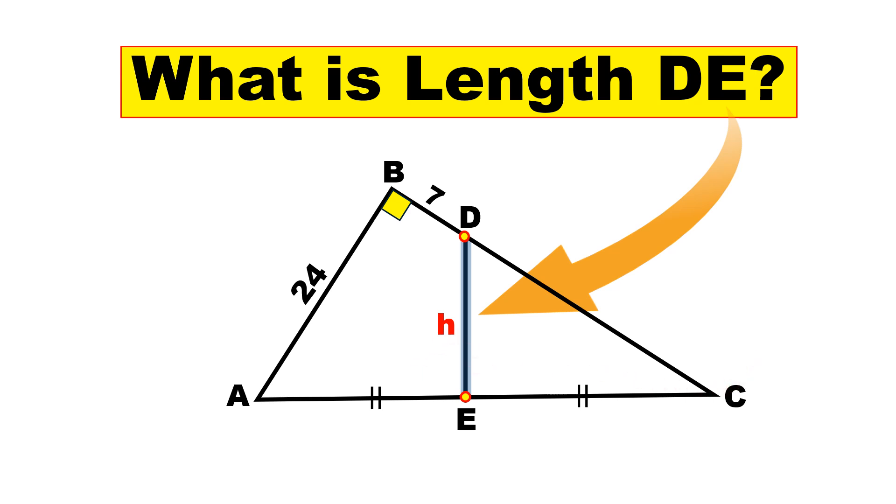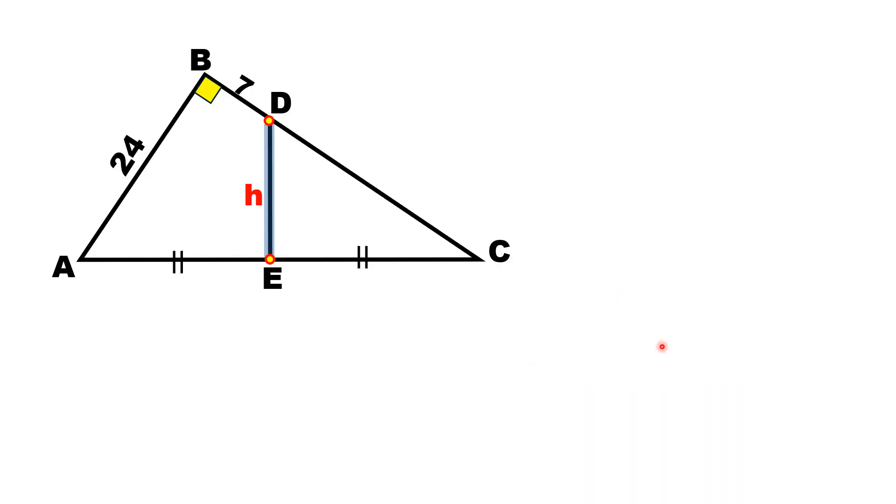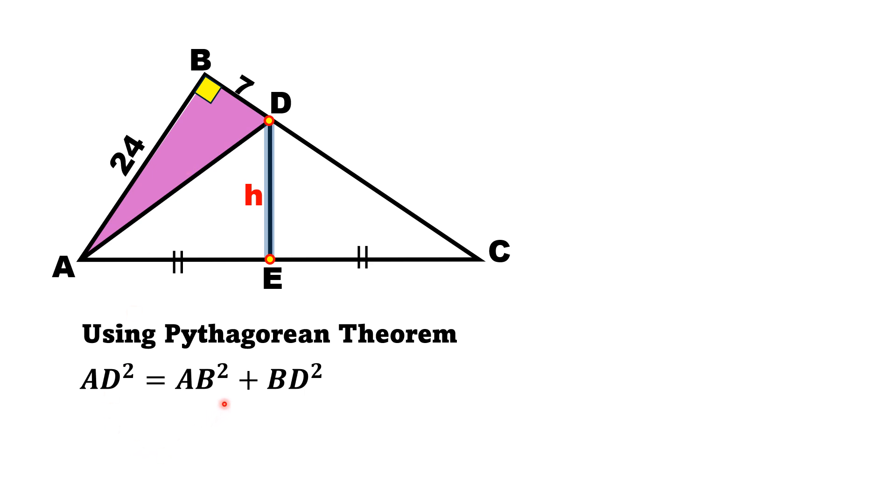So let's move towards the solution. First, we'll draw a line segment from point A to D which forms a right triangle ABD. Using the Pythagorean theorem on this right triangle, we have AD² = AB² + BD².